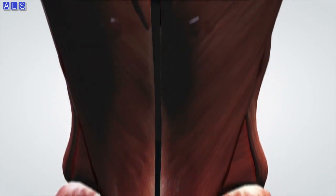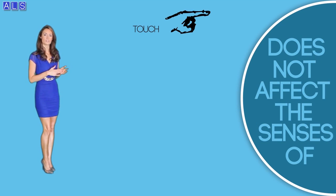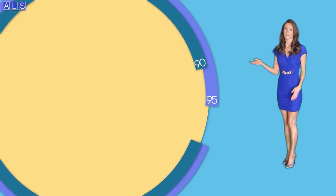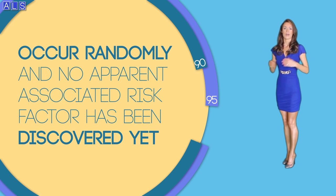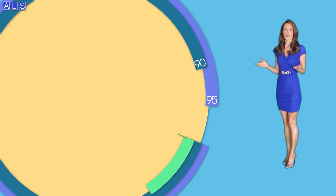In ALS, the affected individual loses the ability to move voluntary muscles, but they may still have control over the movements of the bladder, bowel, and eyes to some degree. Also, this medical condition does not affect the senses of touch, smell, hearing, and taste.